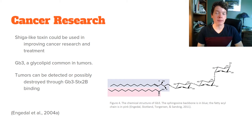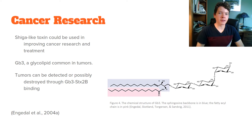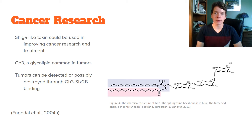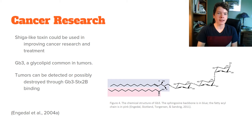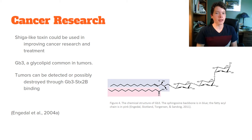While this toxin can be deadly in an outbreak, researchers are attempting to utilize shiga-like toxin to improve cancer treatment. GB3, whose chemical structure can be seen in figure 4 below, is a glycolipid common in cancerous tumors. GB3 is especially present in testicular and breast cancers, and can be bound to by the B unit of the holotoxin. By specialized, targeted use of shiga toxin in cancer patients, tumors could potentially be more effectively detected and treated.